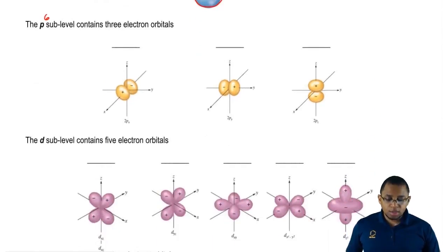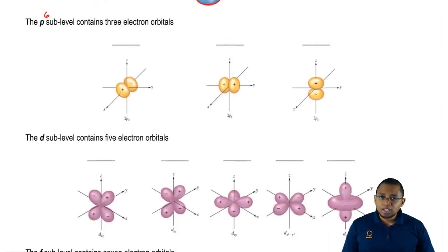For P, P has three electron orbitals, each of them has their own shape. P has three dumbbells.